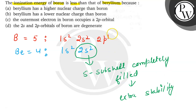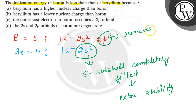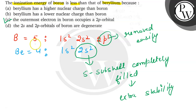Whereas there is 1 electron in the p orbital in boron, so it can be removed easily. So the correct option will be option C. Thank you.